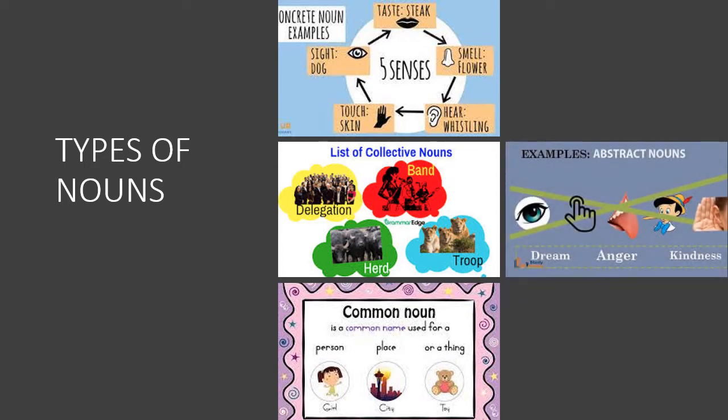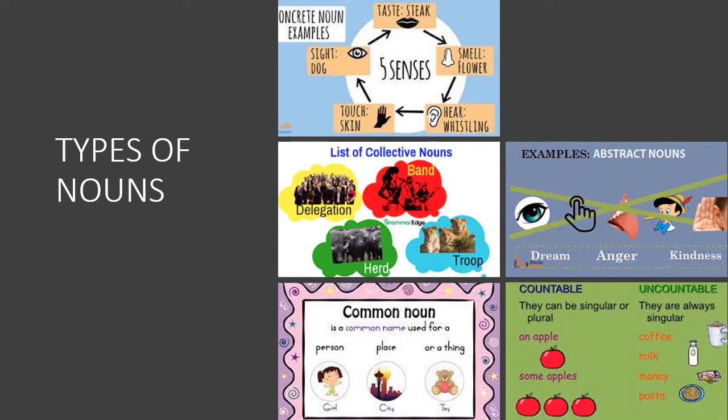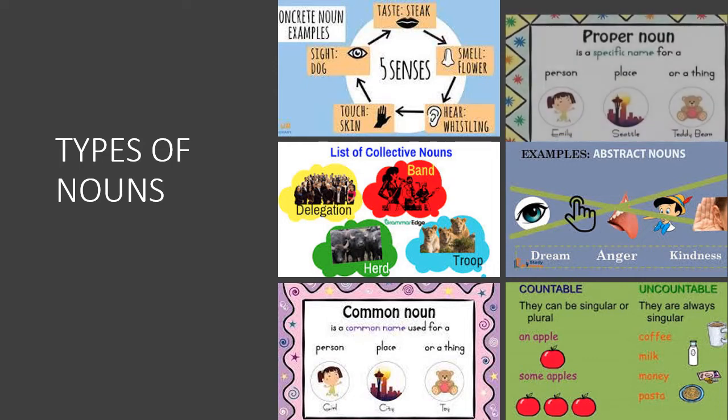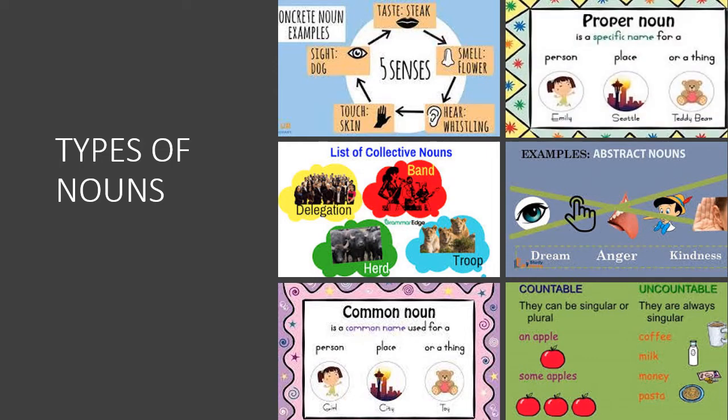Fourthly, we have abstract nouns — names of things that we can neither see nor touch, for example anger. We also have countable nouns — names of things that we can count, for example an apple — and uncountable nouns, names of things that we cannot count. Lastly, we have proper nouns, which are specific names for a person, for example Emily, or a place, for example London.